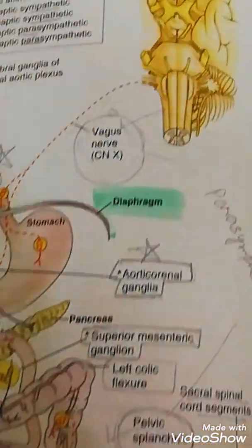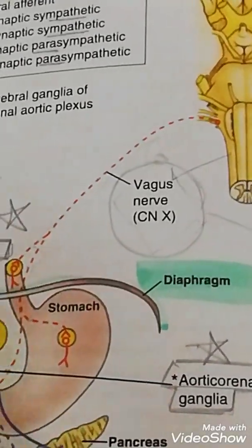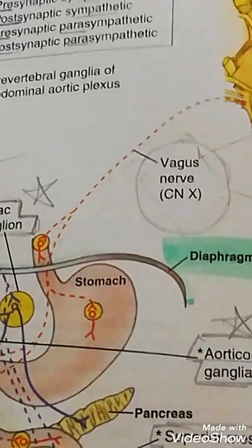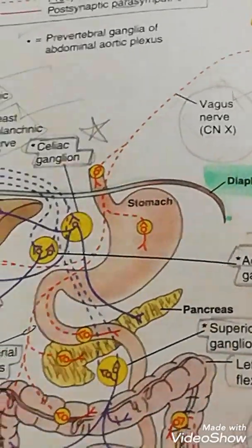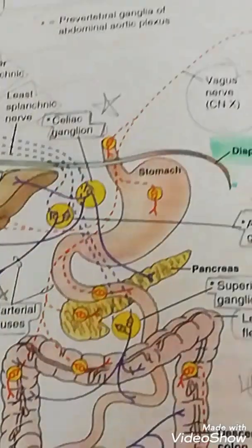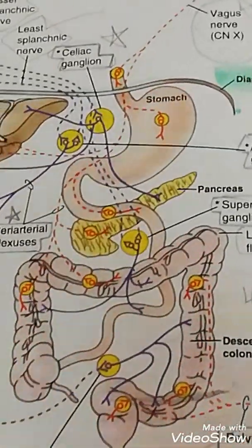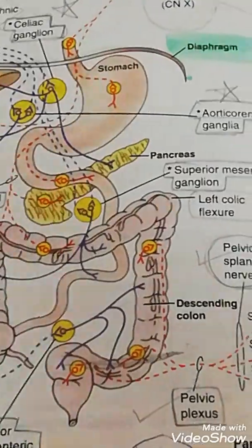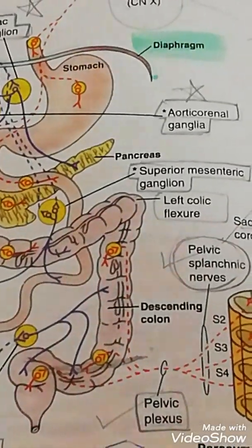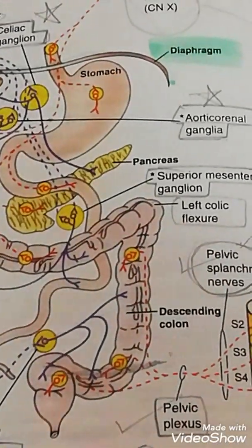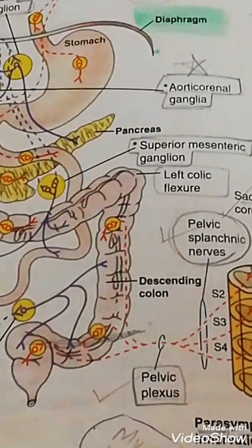Now concentrate on the parasympathetic supply. You can see the incoming vagus nerve — the 10th cranial nerve — shown by the dotted red line, representing the preganglionic or presynaptic parasympathetic fibers coming down to supply the stomach and various viscera, running through various prevertebral ganglia. The vagus nerve supplies up to the level of the left colic flexure, that is, up to and including the transverse colon.